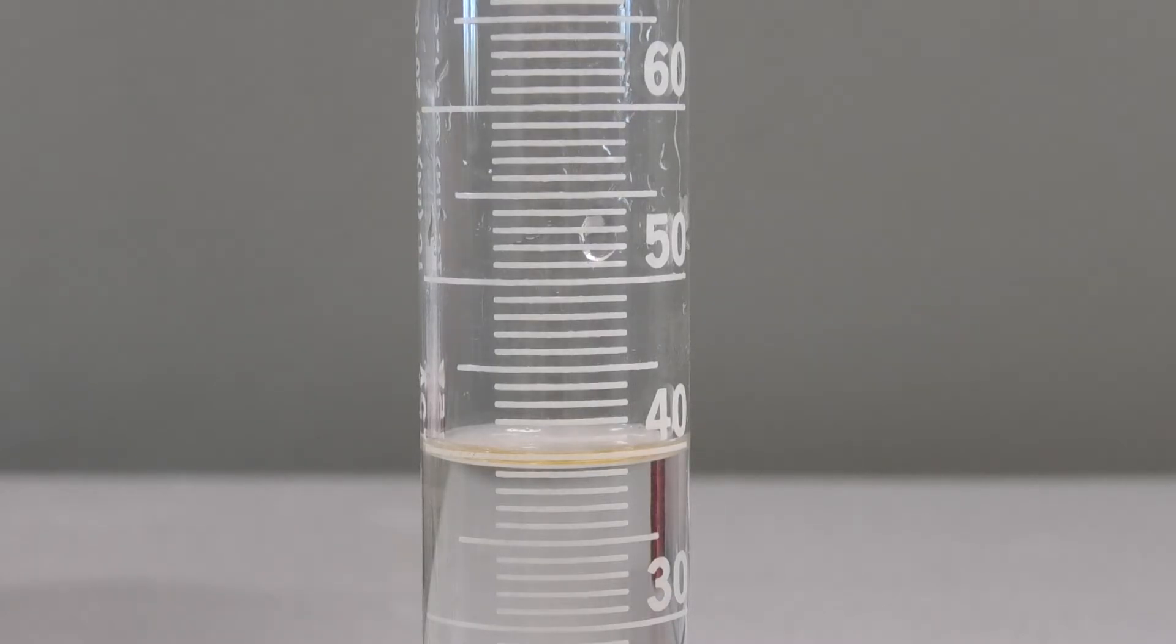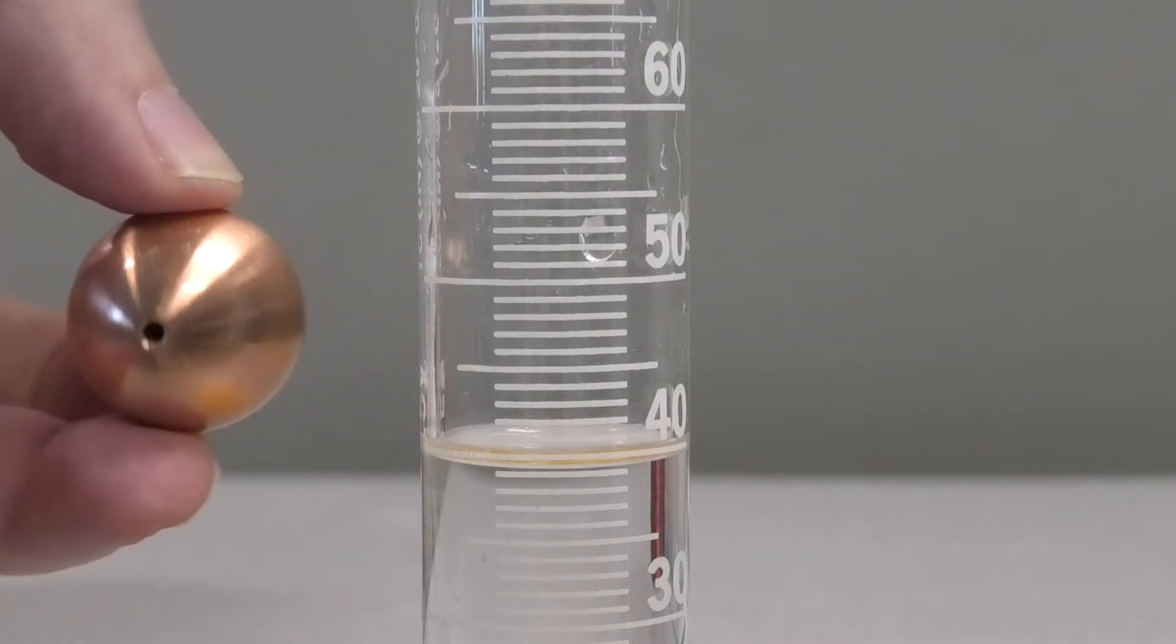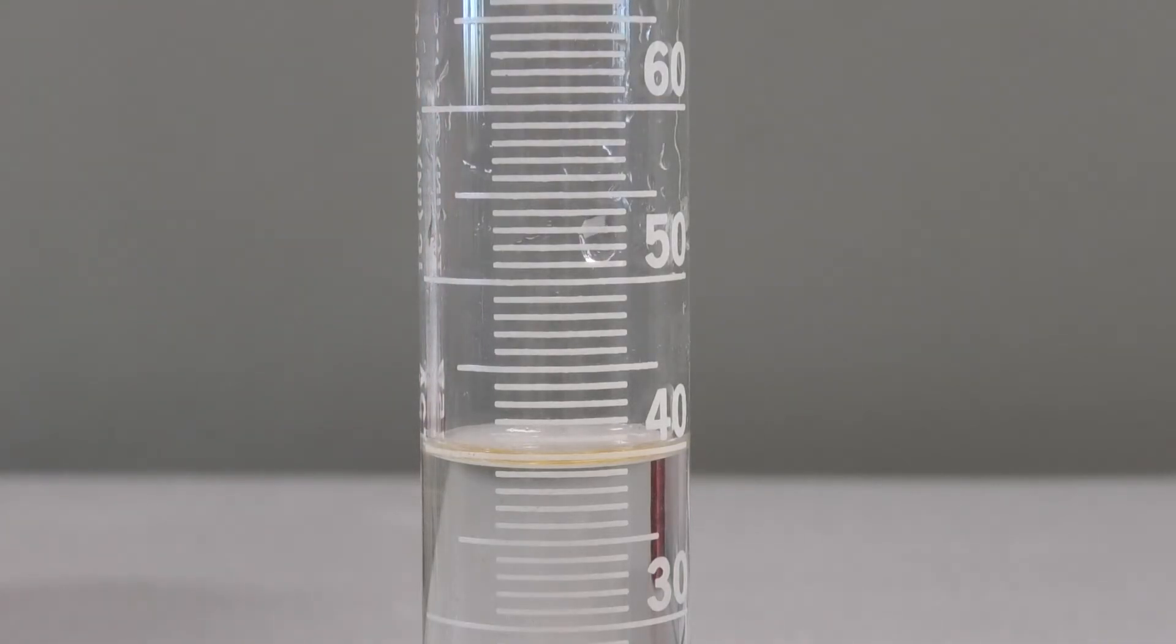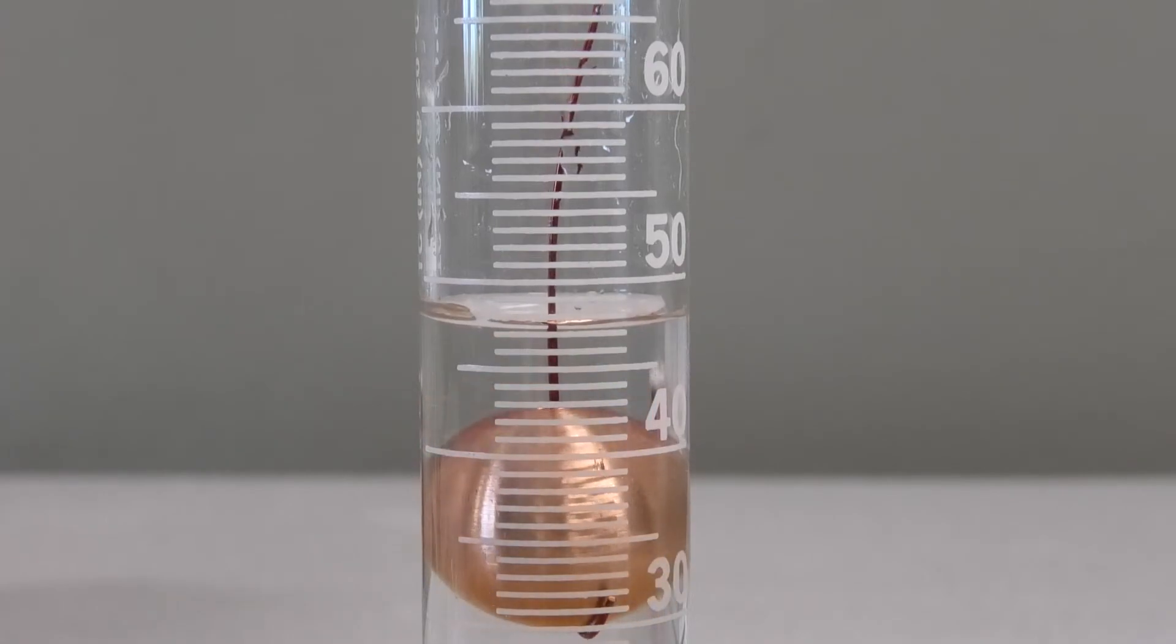The last piece is going to be a piece of copper. This is kind of like the steel when it comes to how heavy it is. We're going to take the copper and put it in. Look at the water level before. Now look at the water level after.